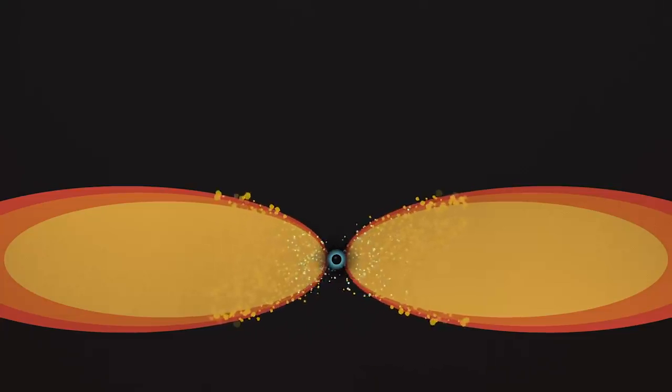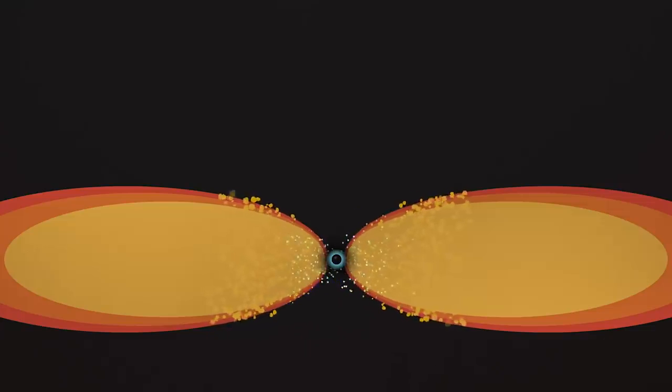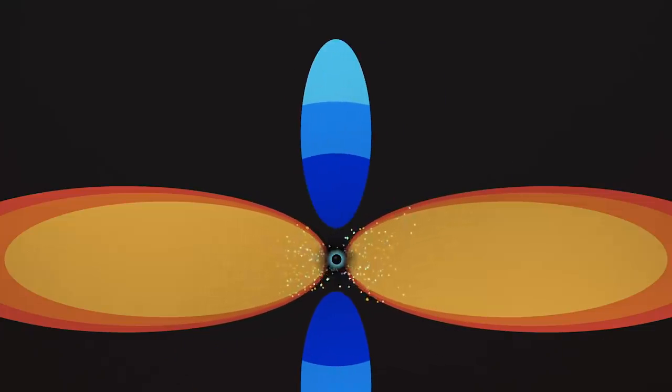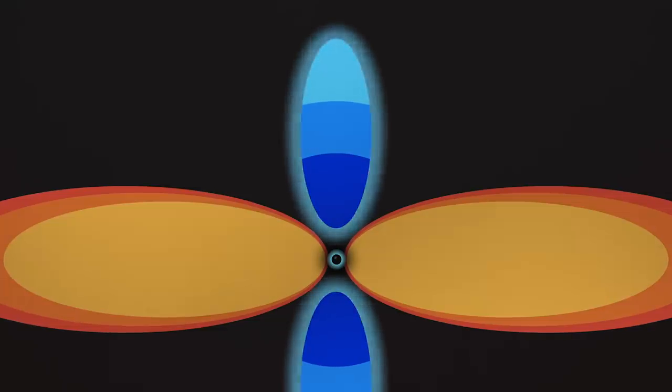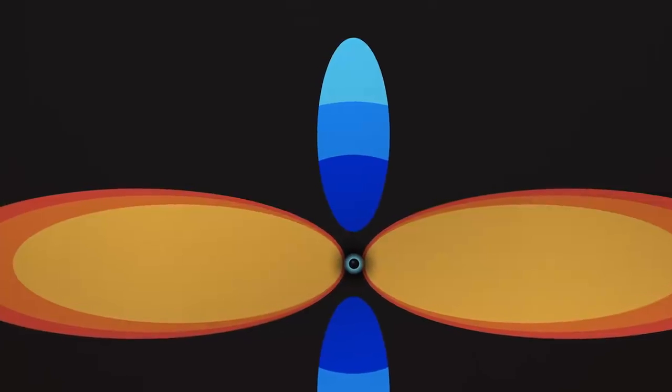Above the black hole is a region of subatomic particles called the corona. The corona is extremely hot, 1 billion degrees, and shines in even higher energy X-rays. Not a lot is known about why the corona is so hot.